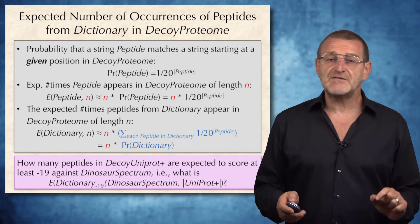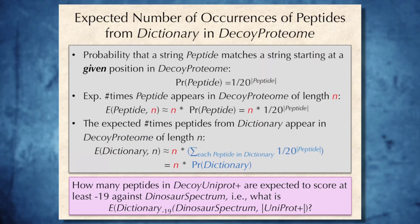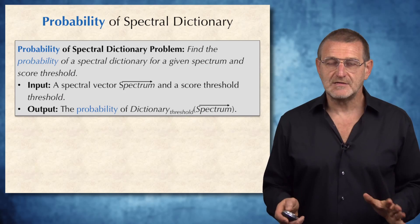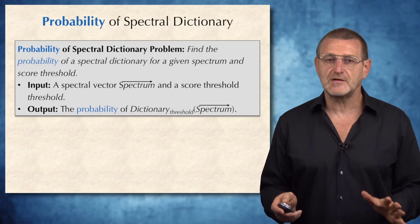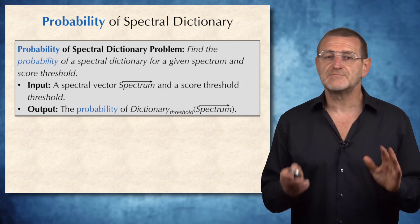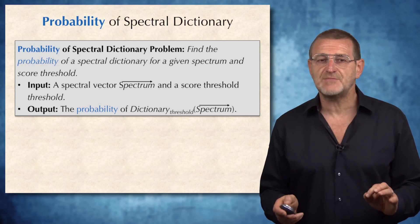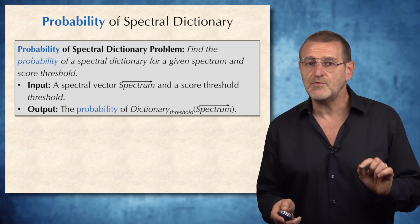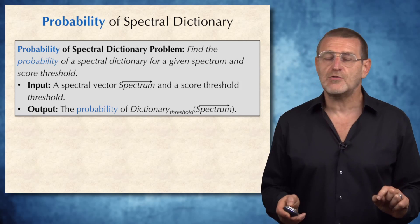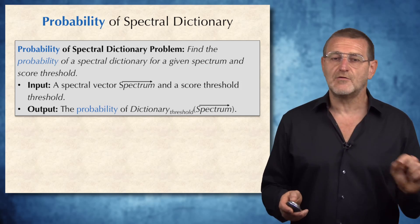The question we will be interested in is how many peptides in a decoy UniProt are expected to score at least minus 19 against the dinosaur spectrum. I remind you that minus 19 is the score of the peptide-spectrum match between the dinosaur peptide and the dinosaur spectrum. To solve this problem, we will first need to solve the probability of spectral dictionary problem: find the probability of a spectral dictionary for a given spectrum and score threshold. The input is a spectral vector and a score threshold, and the output is the probability of the resulting dictionary.